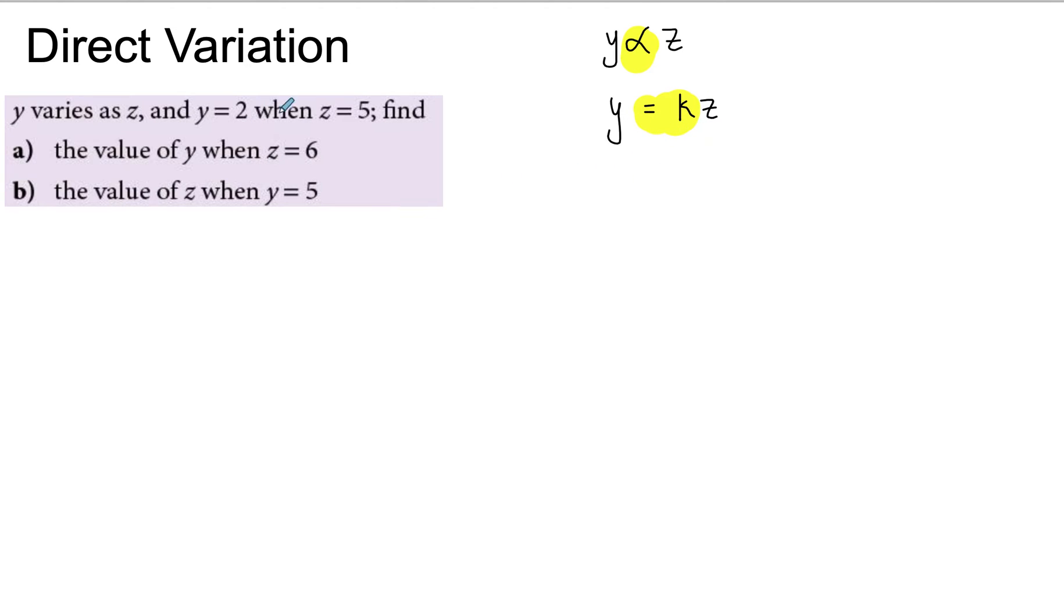So to find K, I'll just substitute the two values I have. They tell you that when y is 2, z is equal to 5. And so you solve it like you would, and this is K equals 2 over 5. So this is my K, and it means that I can rewrite this as y equals 2 over 5